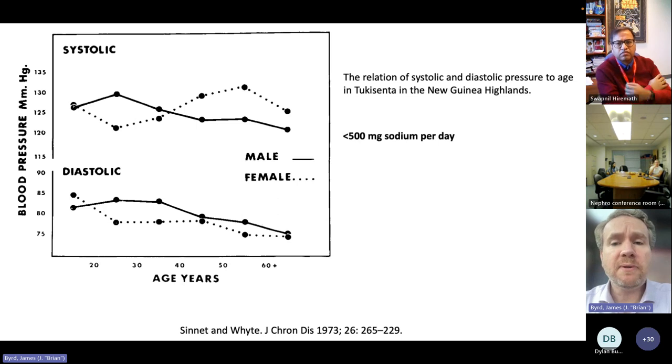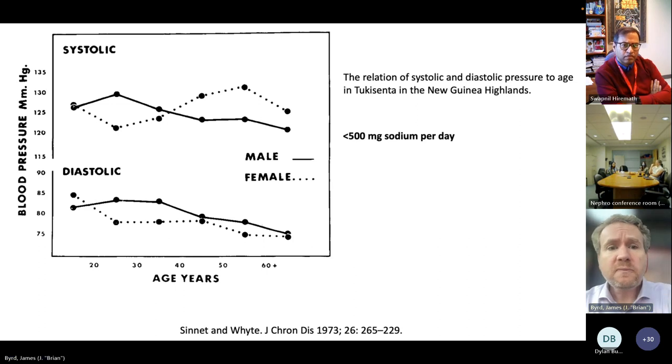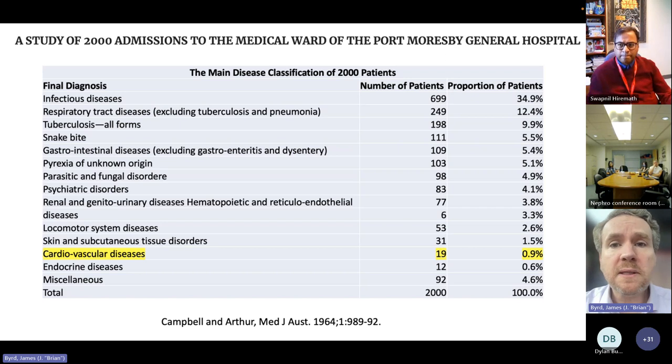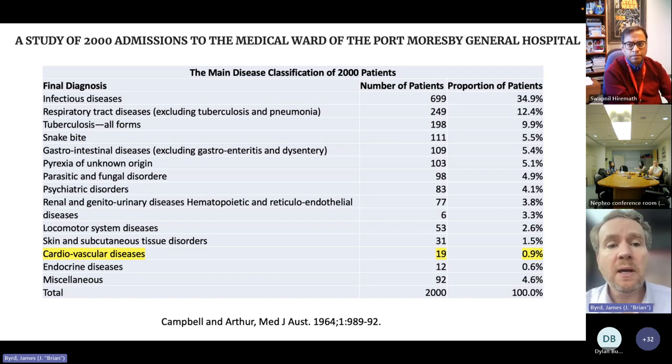When we go over to Papua New Guinea, we find that there can be even a negative relationship between age and systolic blood pressure on a low-sodium diet of less than 500 milligrams of sodium per day. This is a study of 1,000 consecutive admissions to the medical ward of the Port Moresby Hospital in Papua New Guinea. They found that only 0.9% of the admissions were for cardiovascular diseases, markedly different from what we see in the United States and Canada.